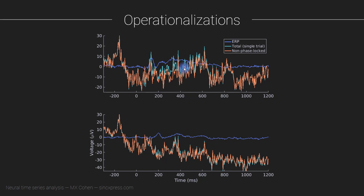You can then apply time-frequency analysis to this orange line — the non-phase-locked part — to get its time-frequency power. I'm also illustrating two different channels from the same trial. When the ERP has a larger magnitude you're removing more from the single-trial data. In this second channel the ERP is very small, so the total signal and the non-phase-locked signal look nearly identical — just a slight shift in one region.